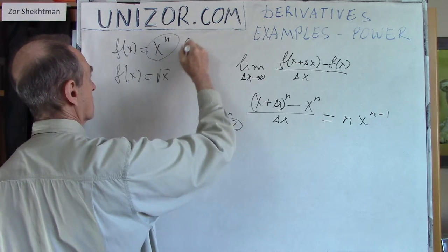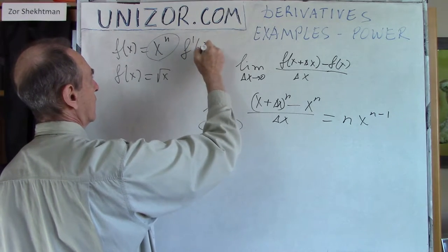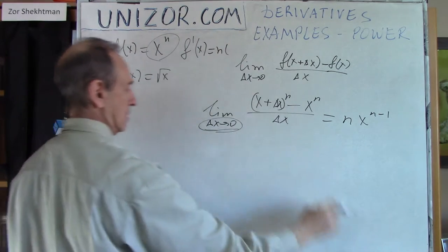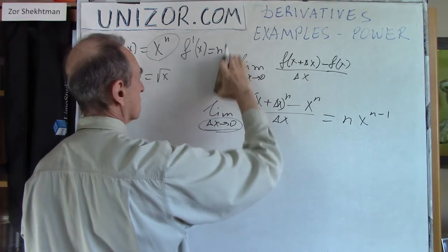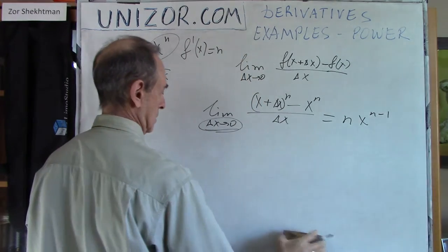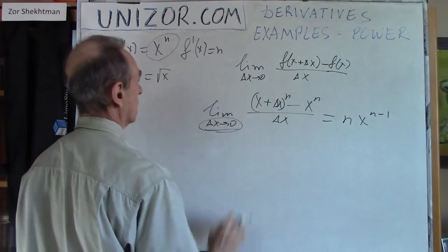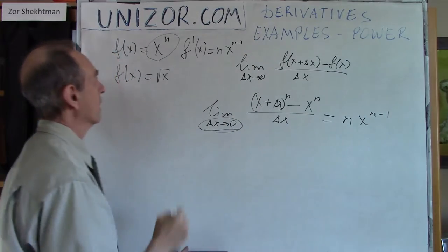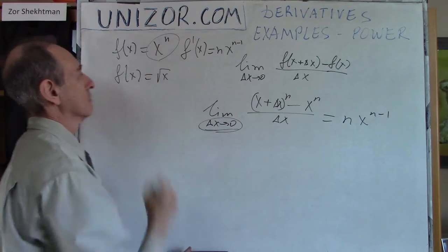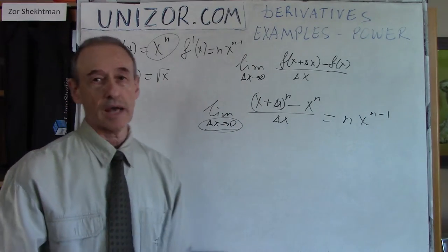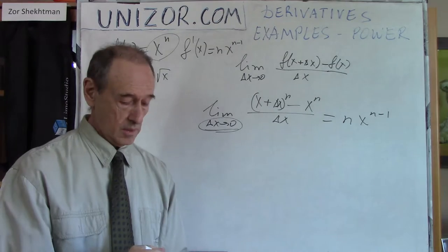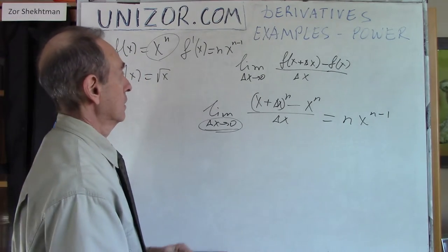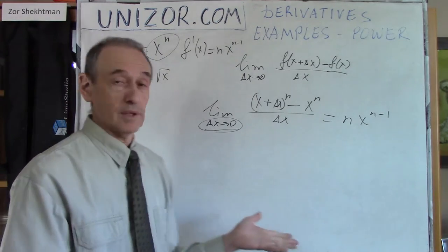So f'(x) is equal to n times x to the power of n−1. That's the derivative of x to the power of n.